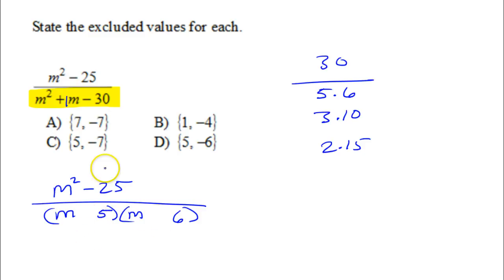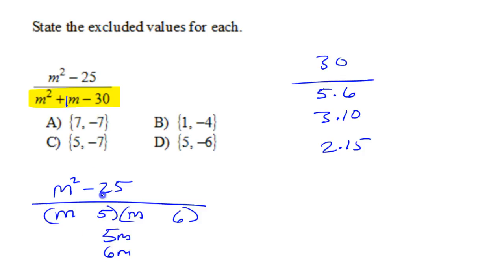Inner plus outer must equal the middle. Inner I have 5m, outer I have 6m. To get positive 1, I need a negative and a positive. Negative times a positive is negative for the negative 30, so this is good.